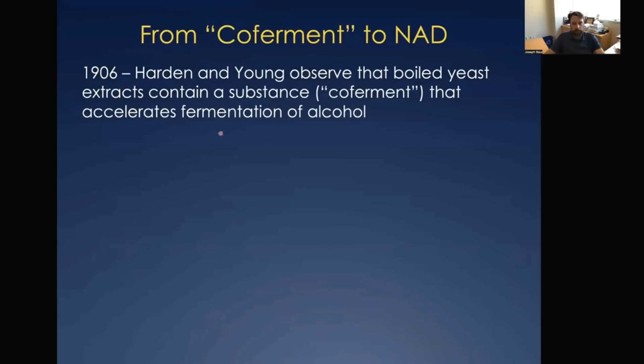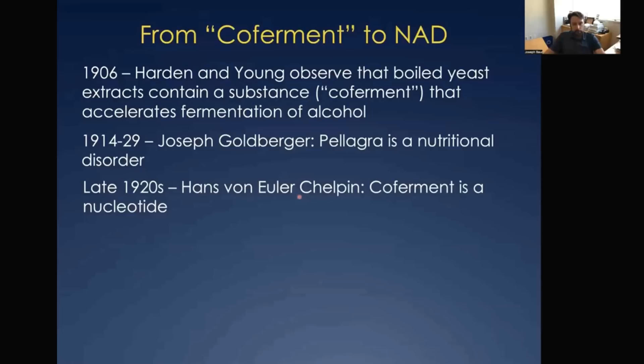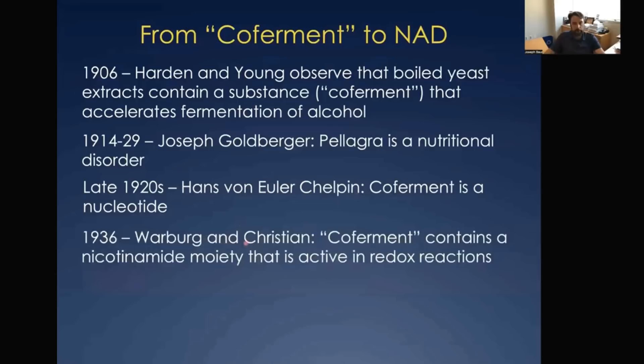The history starts with the discovery of co-ferment by Harden and Young in 1906. They were experimenting with boiled yeast extracts and discovered a substance that could accelerate the fermentation of alcohol even after boiling — they named it co-ferment without knowing much else about it. Between 1914 and 1929, Joseph Goldberger worked to establish that pellagra was a nutritional disorder, demonstrating that improving diet quality — particularly adding meat and milk — could cure it. In the 1920s, Hans von Euler-Chelpin discovered that co-ferment is actually a nucleotide.